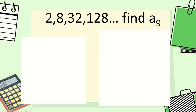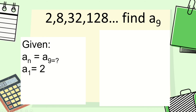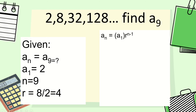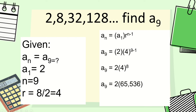Another example: 2, 8, 32, 128 — find a sub 9. The given: a sub n equals a sub 9, a sub 1 equals 2, n equals 9, r equals 4. Writing the formula and substituting: a sub 9 equals 2 times 4 raised to 9 minus 1, which simplifies to give us 131,072.